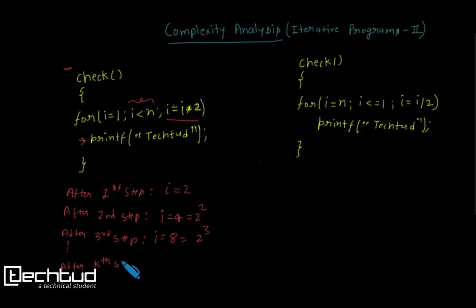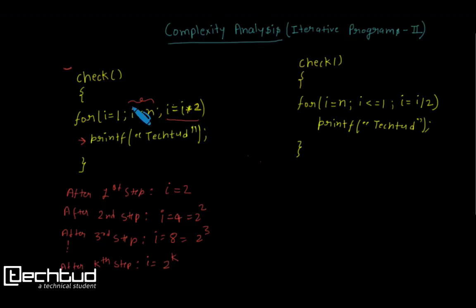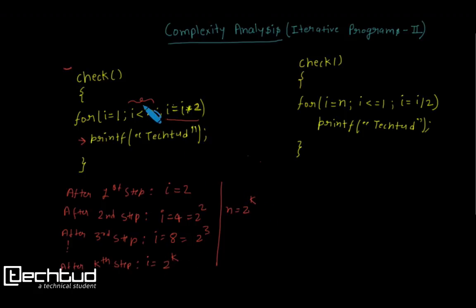After the kth step: in the first step i is 2, in the second step i is 2², in the third step i is 2³, so in the kth step i will be 2^k. For simplicity, let's say 2^k equals n — that is when the condition becomes false and we exit the loop.